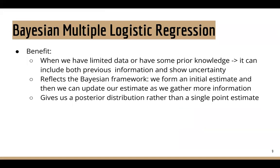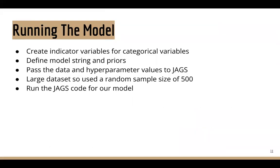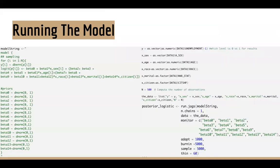Here's our Bayesian logistic model equation, and our sampling model is Bernoulli. Our predictive variables are sex, age, race, marital status, and citizenship. We then ran the model using JAGS and got our results.